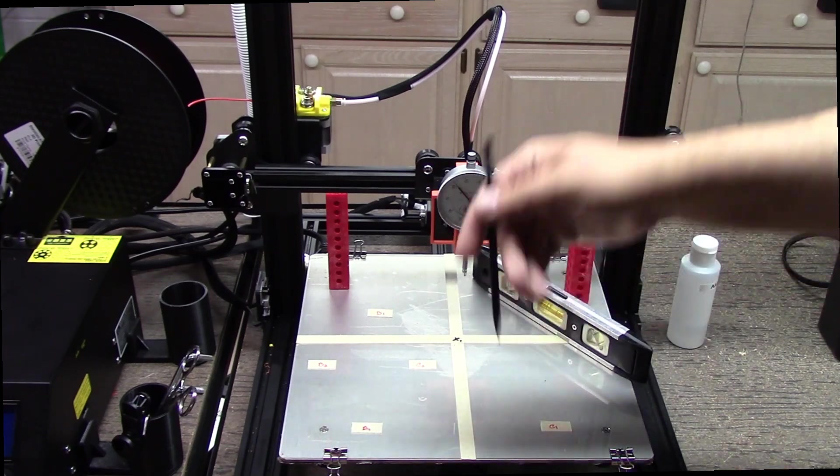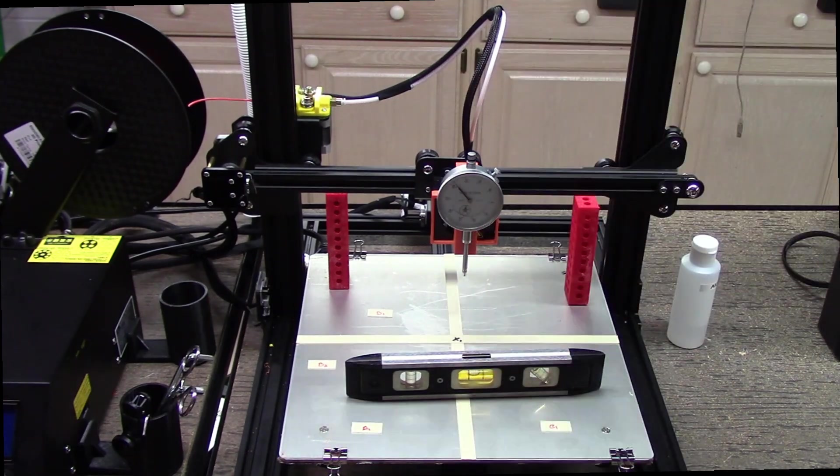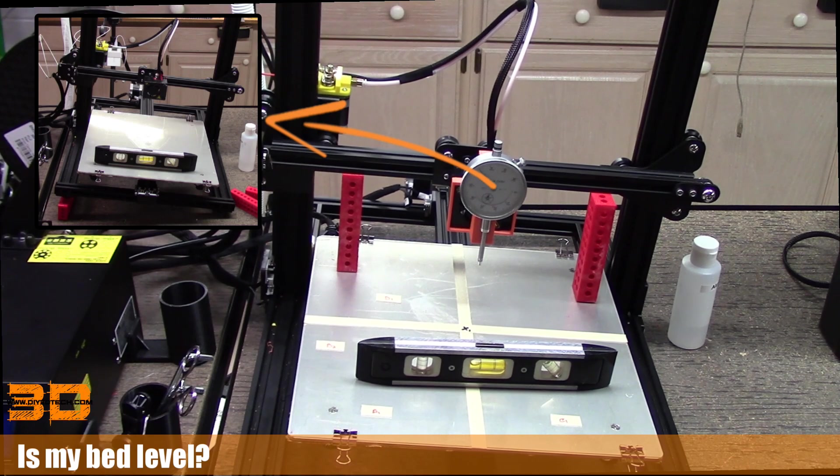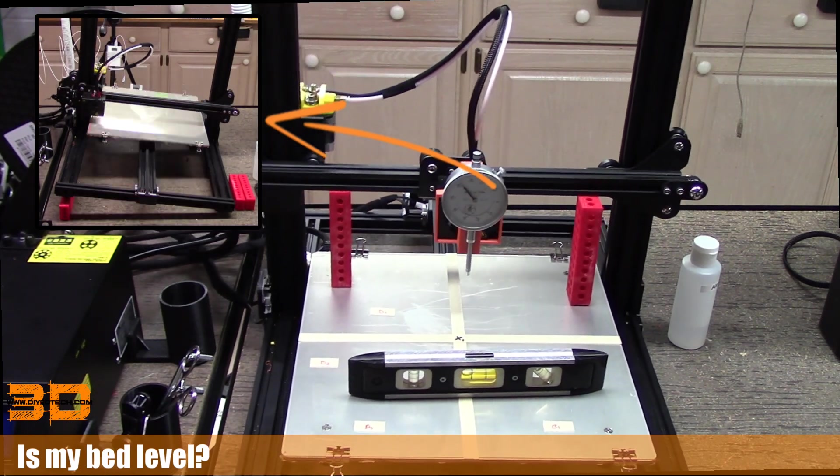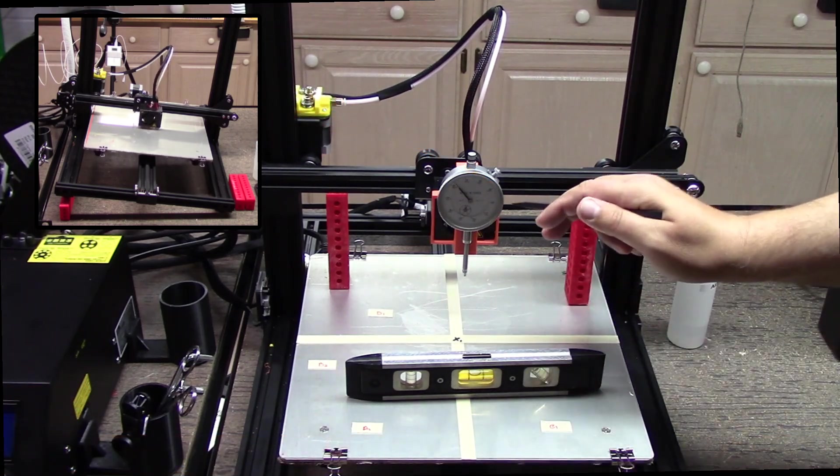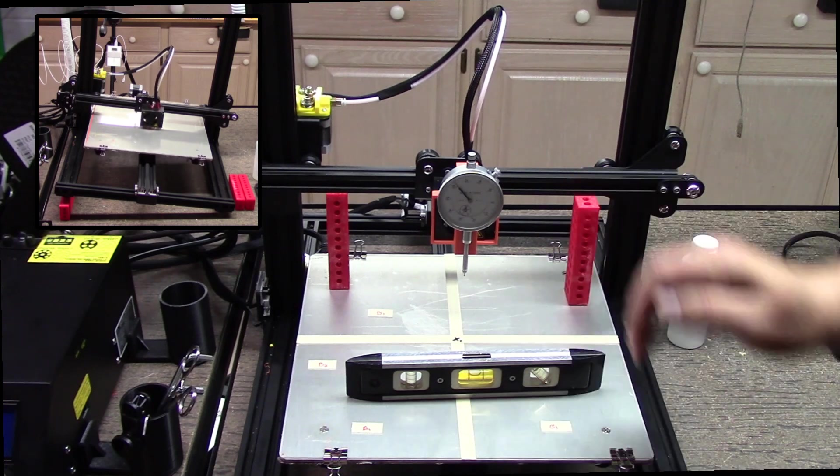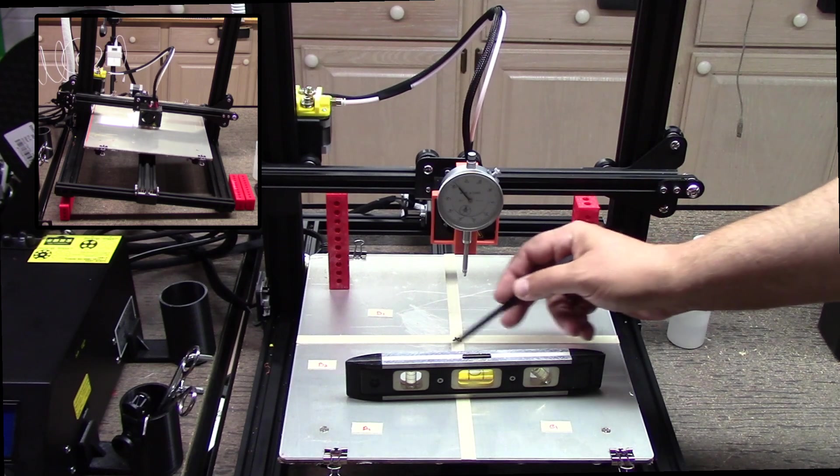Nothing ever gets leveled here because what I can do is I can take this, I can put two bricks underneath here, tip it like this, and is it going to print? Yes. Is my level level? No. My bed is not level but it is still parallel to my tool head. It is still tramped from the bed to the tool head and that's what the important part of this is.